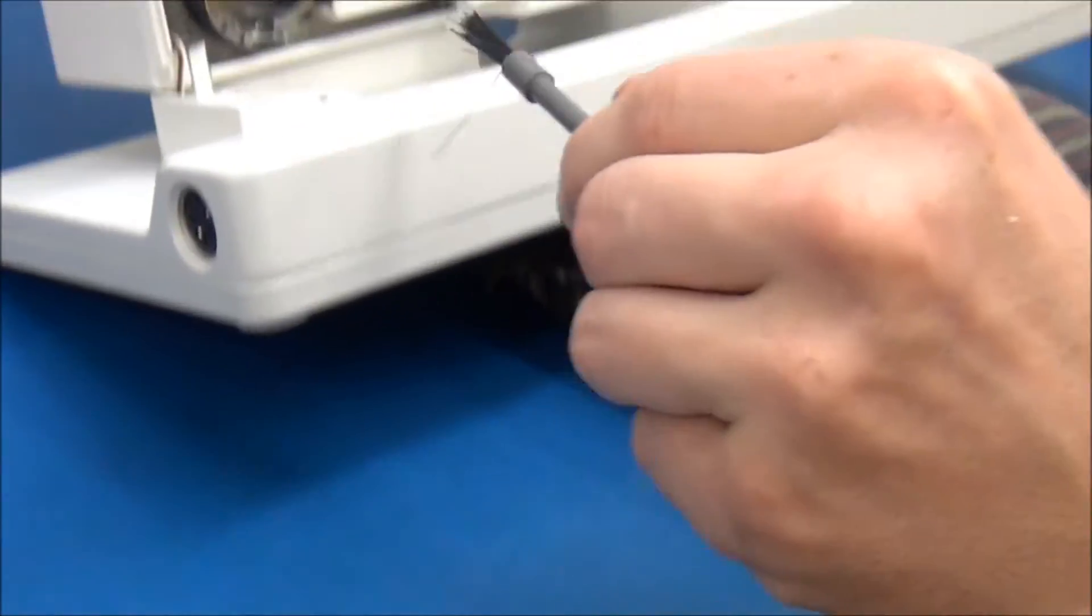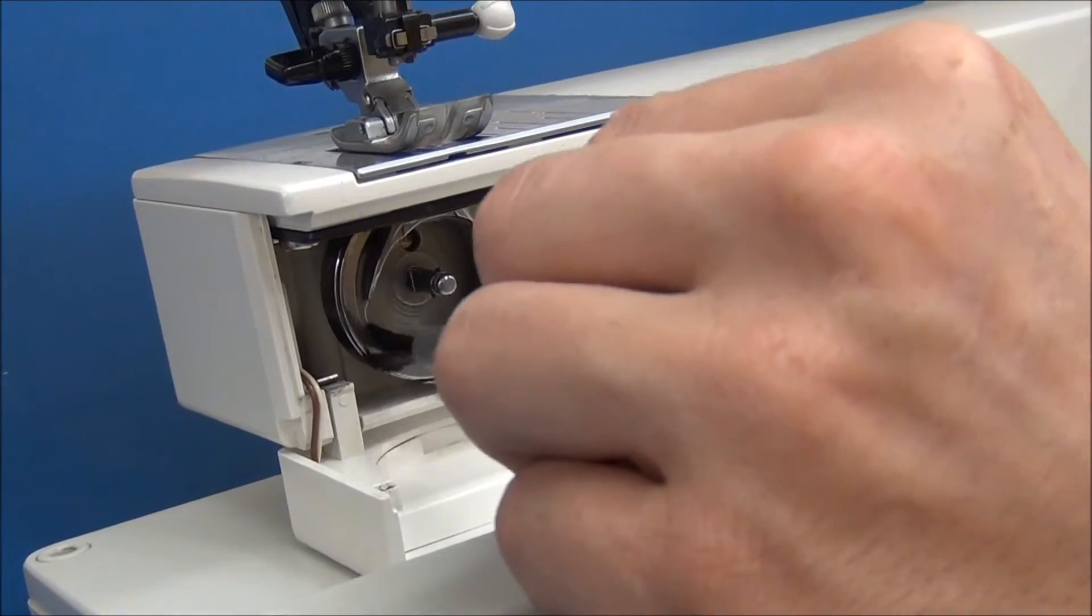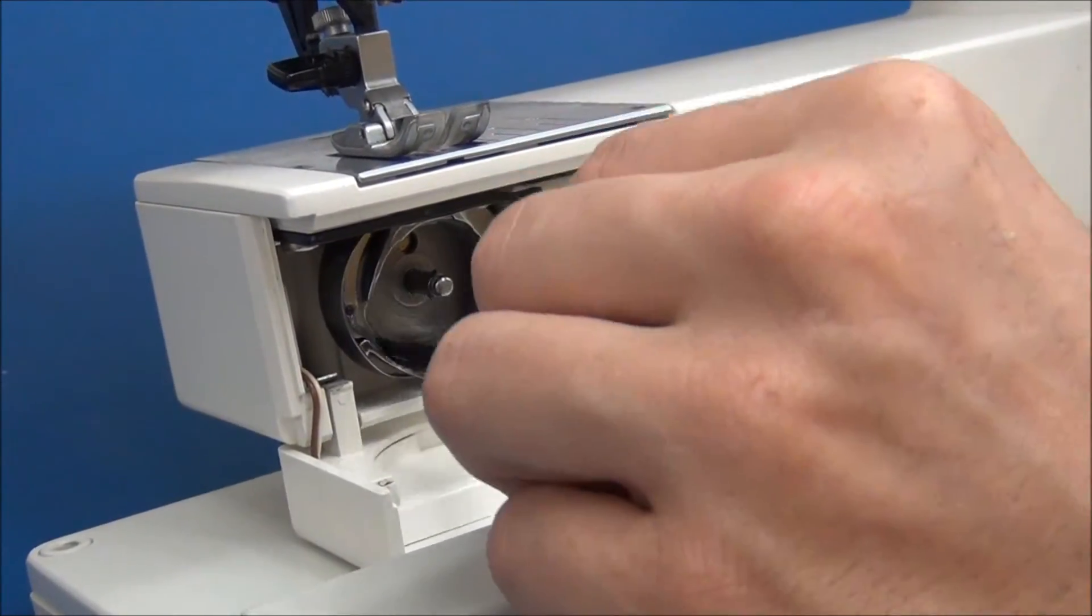This does two things. It attracts the lint that you're about to clean out. We didn't have any lint. And it's also going to put a light coating of oil around the hook.